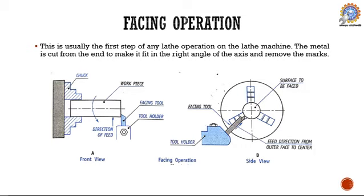Facing operation is usually the first step of any lathe operation. The metal is cut from the end to make it fit at a right angle to the axis and removes tool marks. Facing is an operation performed on the lathe to generate either flat surfaces or shoulders at the end of the workpiece — meant for either reducing the workpiece length or obtaining a flat surface, as shown in the figure.